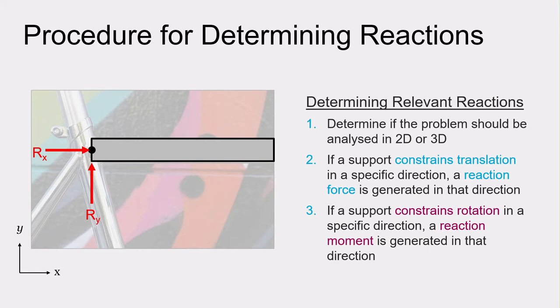Translation is not the only possible degree of freedom, so we also have to look at what rotations are constrained by the support and add appropriate moments to replace that constraint. As the welded connection of the bike restricts rotation within the XY plane, we need to add a moment to prevent that motion, a moment in the Z direction.